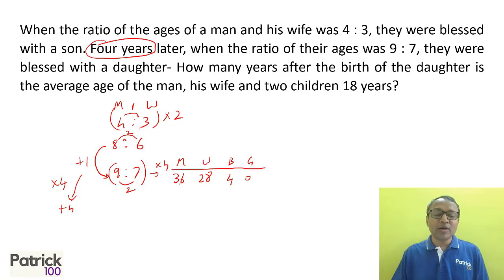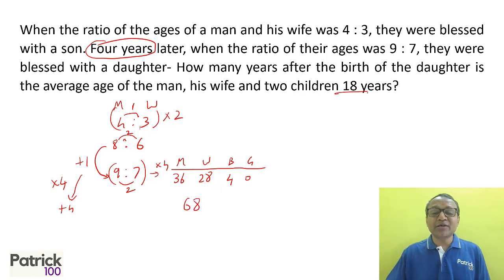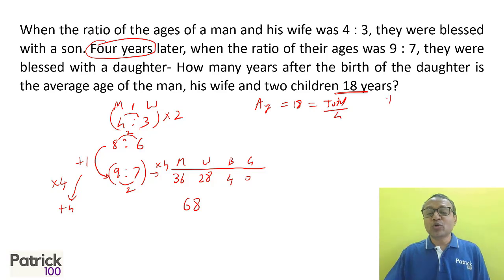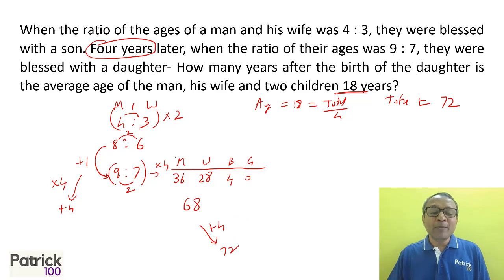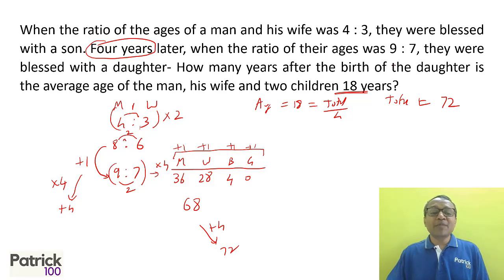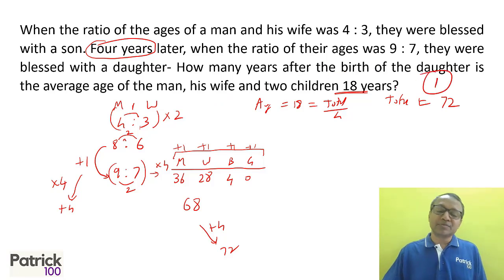Adding total ages: 36 + 28 + 4 + 0 = 68. We want an average of 18 years for 4 people, so total = 18 × 4 = 72. We need to increase from 68 to 72, which is +4. Each year everyone gains 1 year, so after 1 year the total increases by 4. So how many years after the daughter's birth is the average age 18? The answer is 1 year.